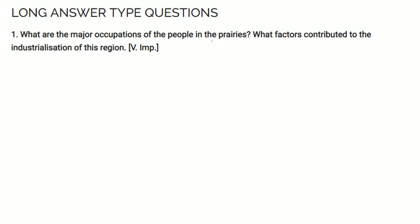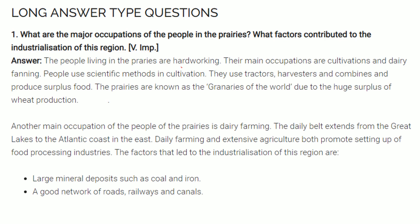What are the major occupations of the people in the prairies, and what factors contributed to the industrialization of this region? The people living in prairies are hardworking. Main occupations are cultivation and dairy farming. People use scientific methods, tractors, harvesters and combines, producing surplus food. Prairies are known as the granaries of the world due to huge surplus wheat production. The dairy belt extends from the Great Lakes to the Atlantic coast. Dairy farming and extensive agriculture promote setting up of food processing industries. Factors leading to industrialization include large mineral deposits like coal and iron, and a great network of roads, railways and canals.